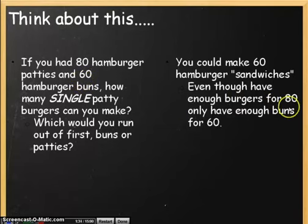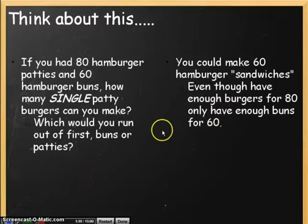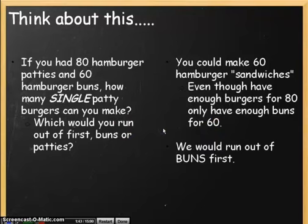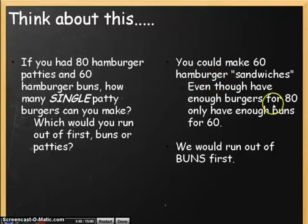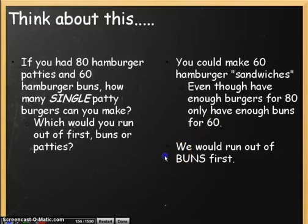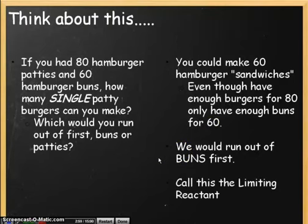However, I only have enough buns to make 60 sandwiches. So even though my burgers are saying let's go for 80, my buns are saying I can only do 60, and then I'm going to be used up. The fact that we would run out of the buns first is what's limiting the number of sandwiches I can make. So because we would run out of those buns first, we call the buns the limiting reactant.